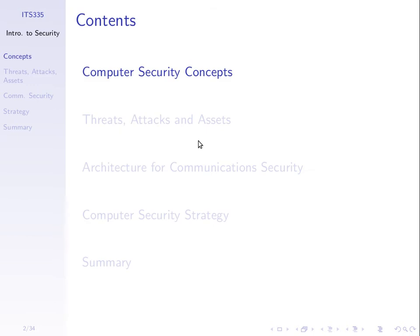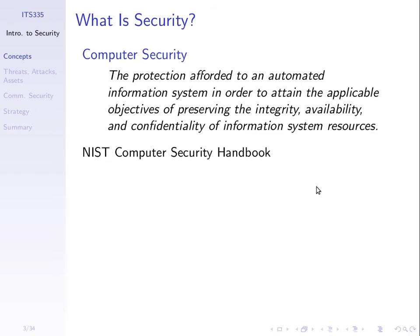Let's start with some definitions of what we mean by computer security and introduce some notation and terminology. Here's a definition from a handbook produced by NIST — a government standards organisation in the US that produces recommendations and standards about computing, including security. They say computer security is the protection afforded to an automated information system in order to attain the objectives of preserving integrity, availability, and confidentiality of information system resources.